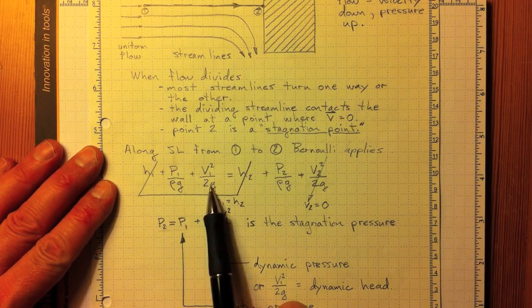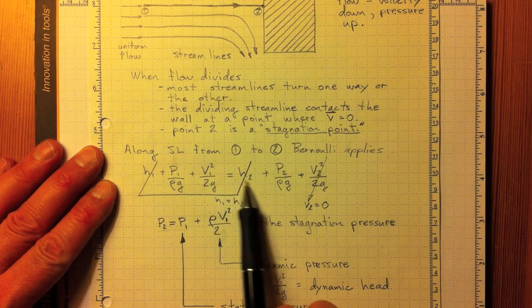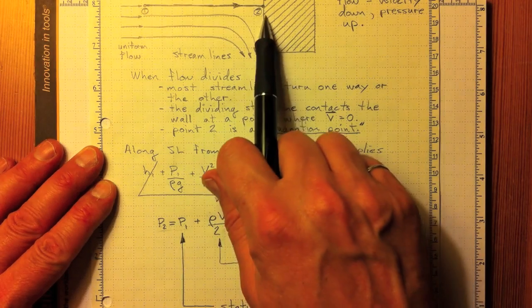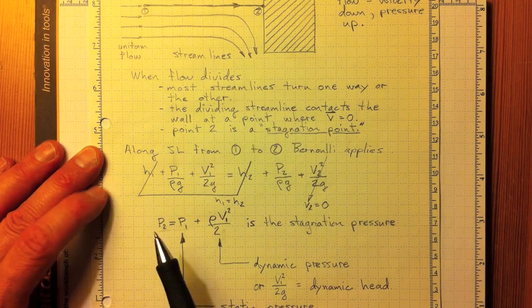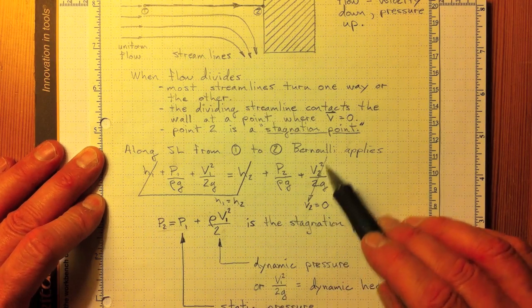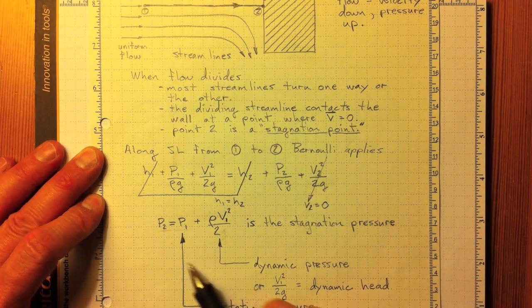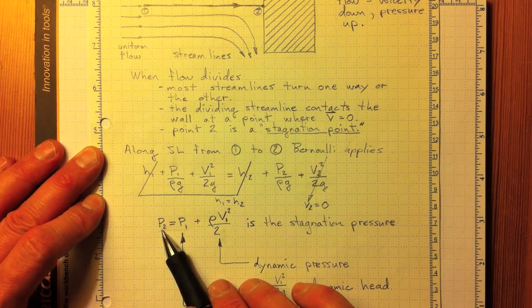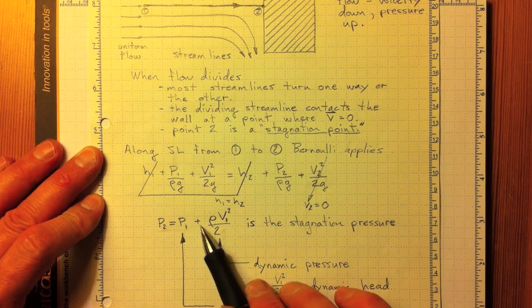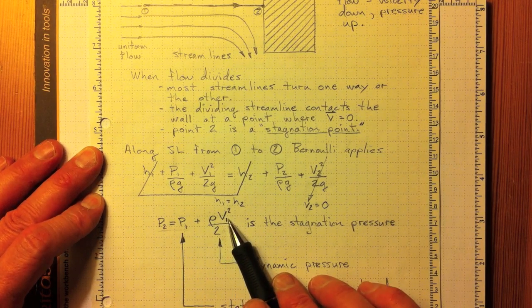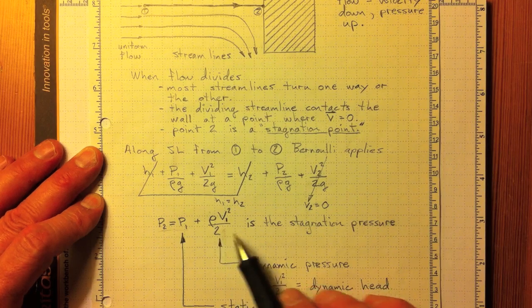h1 plus p1 over rho g plus v1 squared over 2g equal to the same for location number 2. And the heights are the same. The velocity at location 2 is equal to zero. So that tells us that the pressure at 2 will be higher than the pressure at 1 by rho times v1 squared divided by 2.